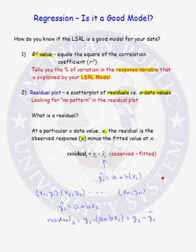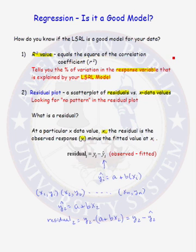So in summary, after you've done your least squared regression, to decide whether you have a good model that you should use, you want to look at the r-squared value, which tells you the percentage of variation in the response variable explained by your model — you want that quantity to be large, as close to 100% as possible. You also want a good residual plot. But remember, a good residual plot takes precedence over a large r-squared value.